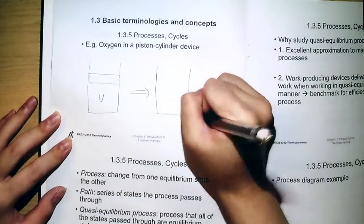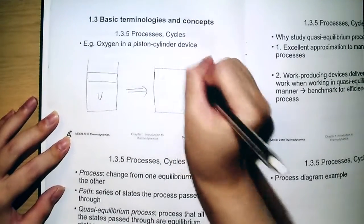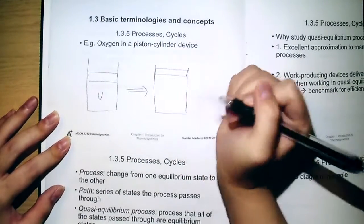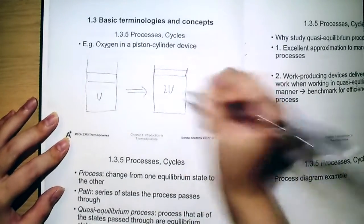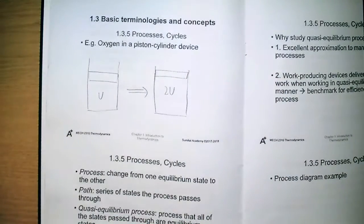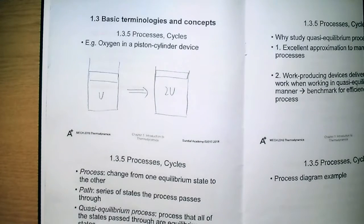That is, you can schematically draw this to be this one. You have a piston here, and the volume has been increased to two times the original. Both the start state and end state will be equilibrium states.